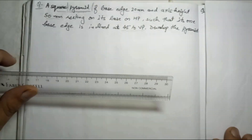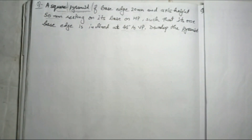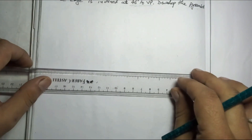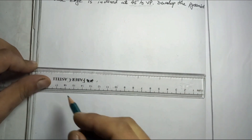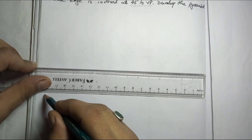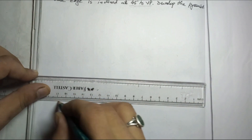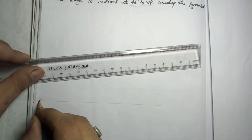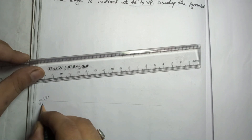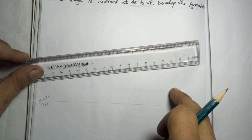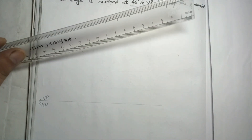As we have done in the parallel line method, I will try to compare the parallel line with the radial line so that you can understand and remember. We start the same way — first we will draw the XY line. This is VP and HP. We will make the front view and top view, then develop, just like the parallel line method.